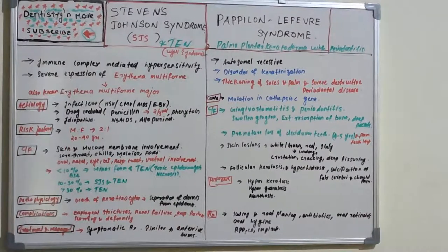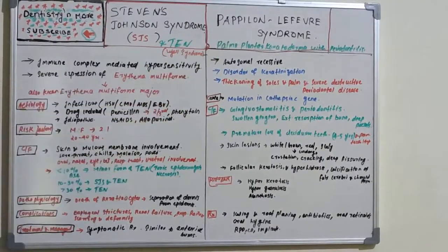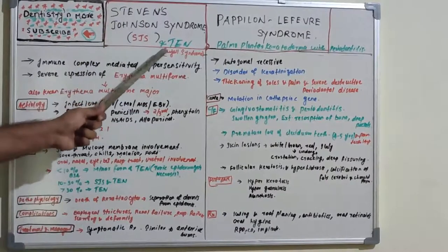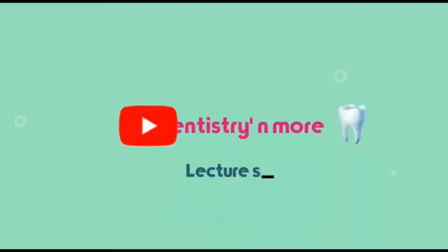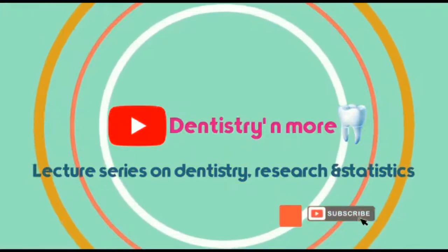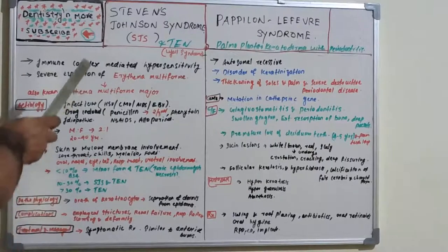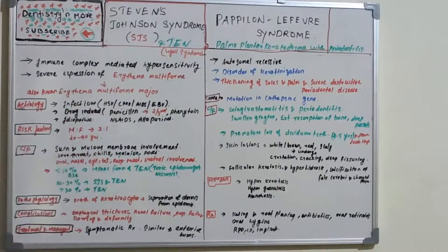Continuing our syndromes series, today's session covers Stevens-Johnson syndrome and Papillon-Lefèvre syndrome. Stevens-Johnson syndrome is also known as toxic epidermal necrolysis or Lyell's syndrome. These two should be studied together because they have the same clinical presentation, differing only in severity of skin reactions.